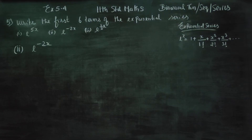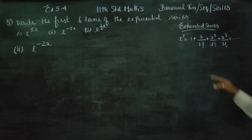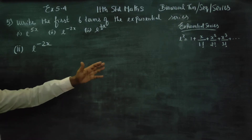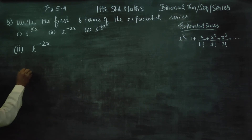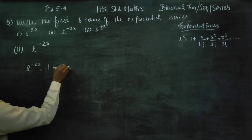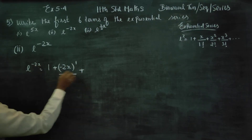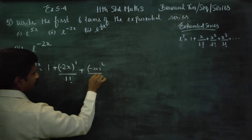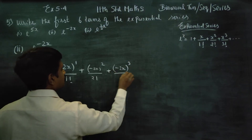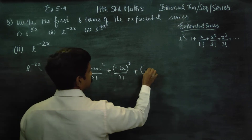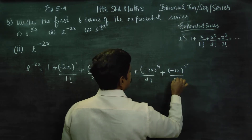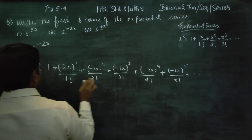The second subdivision is e power minus 2x. You can write the formula in the corner of the page. We know that e power x equals 1 plus x by 1 factorial and so on. So e power minus 2x equals 1 plus minus 2x whole power 1 by 1 factorial, plus minus 2x whole power 2 by 2 factorial, plus minus 2x whole power 3 by 3 factorial, plus minus 2x whole power 4 by 4 factorial, plus minus 2x whole power 5 by 5 factorial, and it goes on — 6 terms.